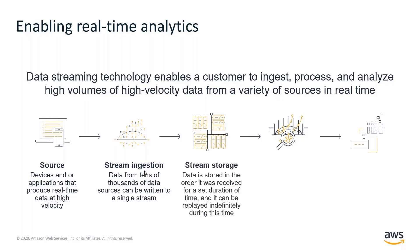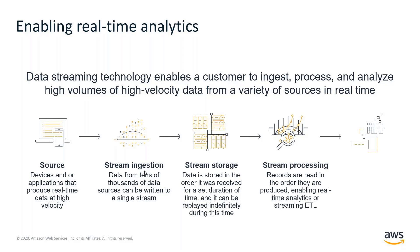Once the stream ingestion layer captures these messages, it deposits them into a stream storage layer such as Kinesis Data Streams. Following this, you can have a number of consumers that read and process the streaming data in near real time — whether it's for streaming ETL, aggregations, anomaly detection, etc. The last component is the destination, where data can simply be stored in a data lake for further analytics, or aggregations can be performed in the stream processing layer and stored in a database.